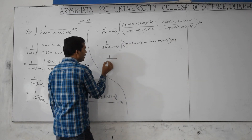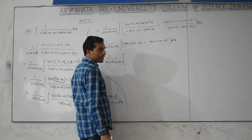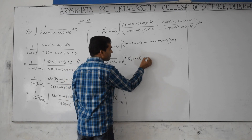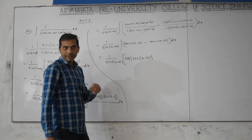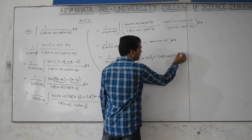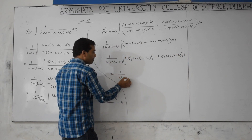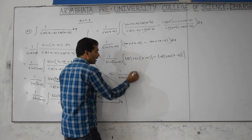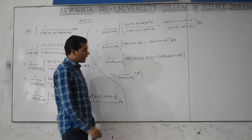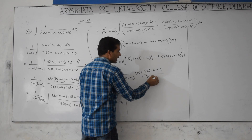So 1 by sin(b minus a), integration gives log of sec(x minus a) — since x minus a differentiation is 1 — minus log of sec(x minus b), since that differentiation is also 1. So the result is 1 by sin(b minus a) times log of sec(x minus a) by sec(x minus b) plus c.